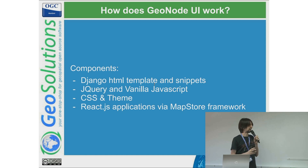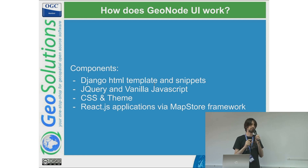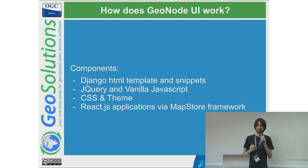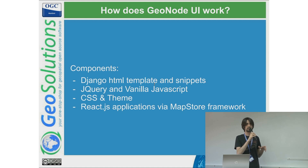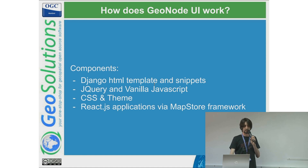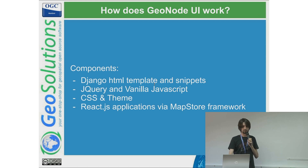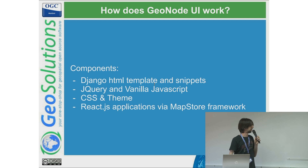We try to list what these pieces are. First, the Django template snippets — with snippets we mean some small HTML that could easily be overridden through a GeoNode project. So if you have a project you can override that component and replace, for example, the hero of the page, the header, or the footer, without touching the core. One of the aims of this new implementation was to avoid forking the main repository and allow maximum customization through a GeoNode project. There is still some jQuery and vanilla JavaScript to manage the bootstrap of the layout, for example the header and the footer.